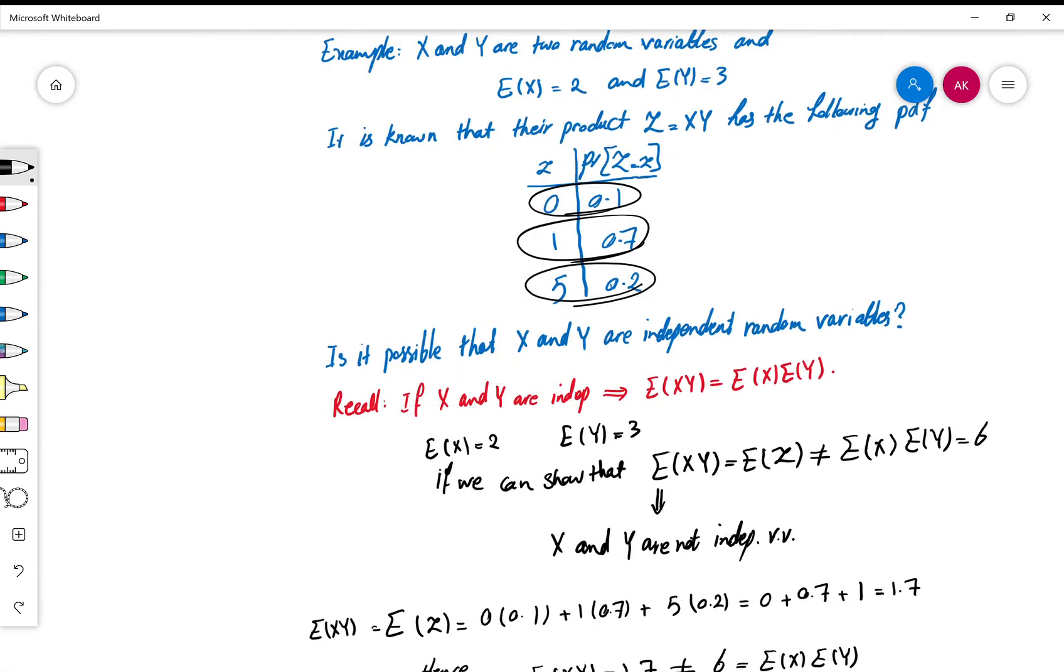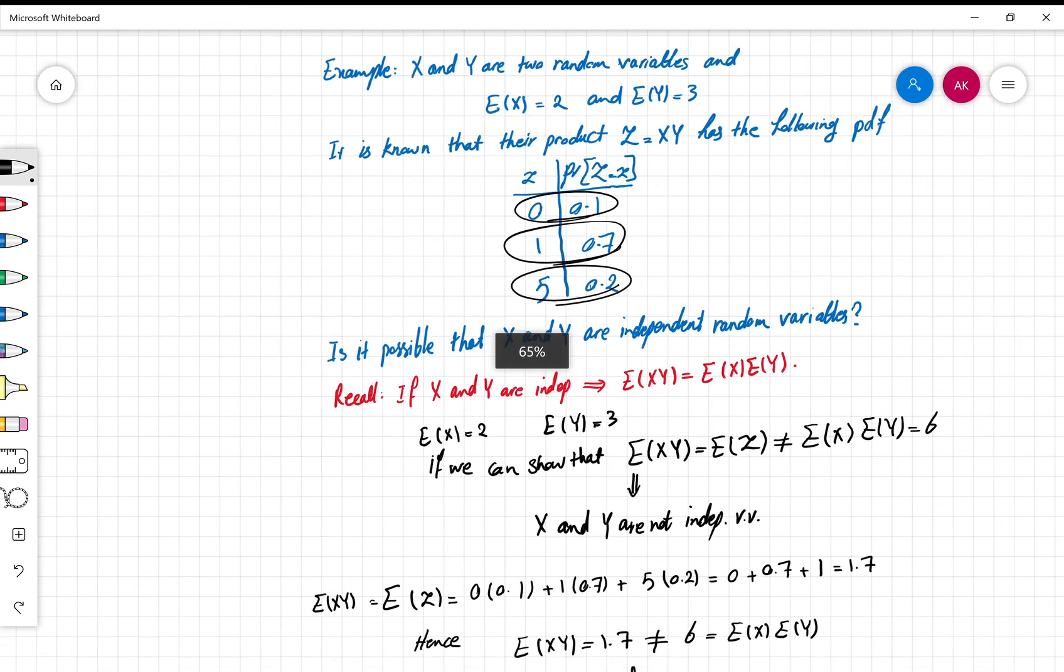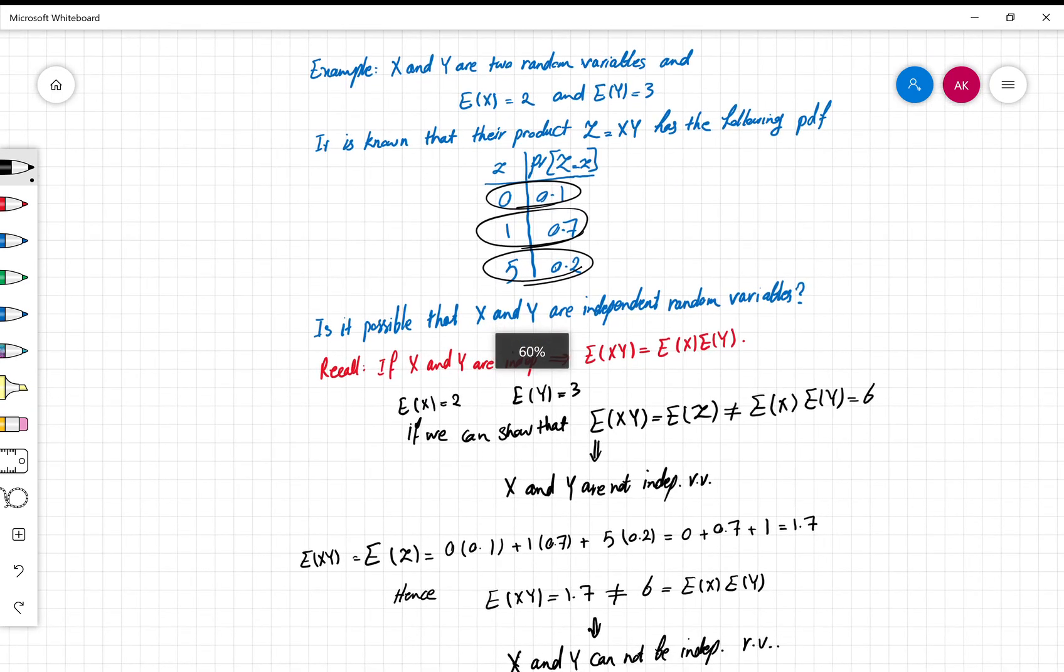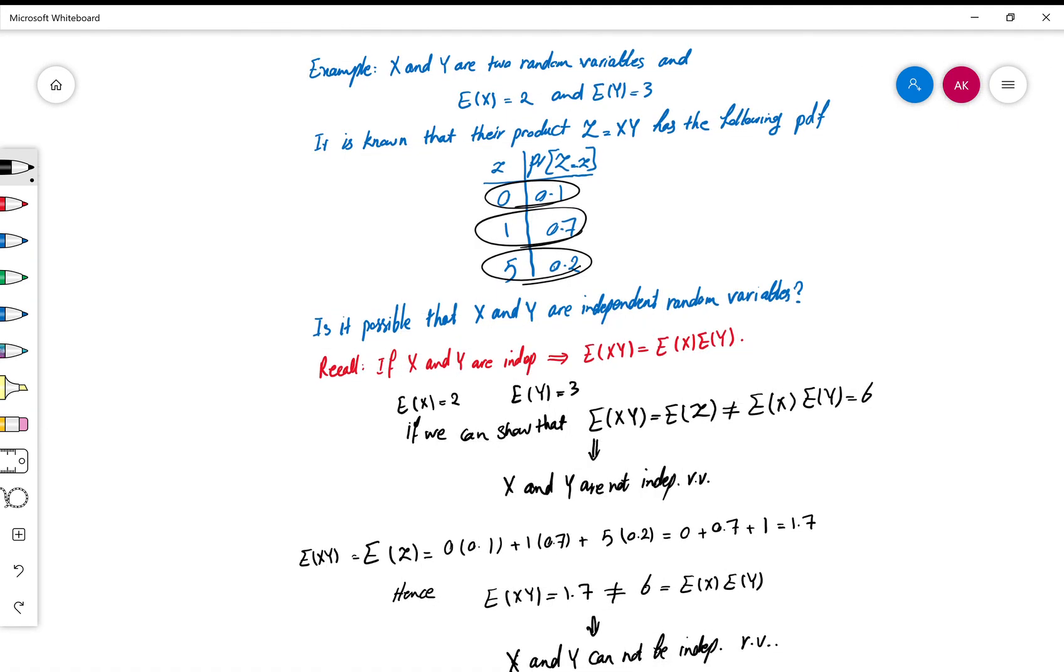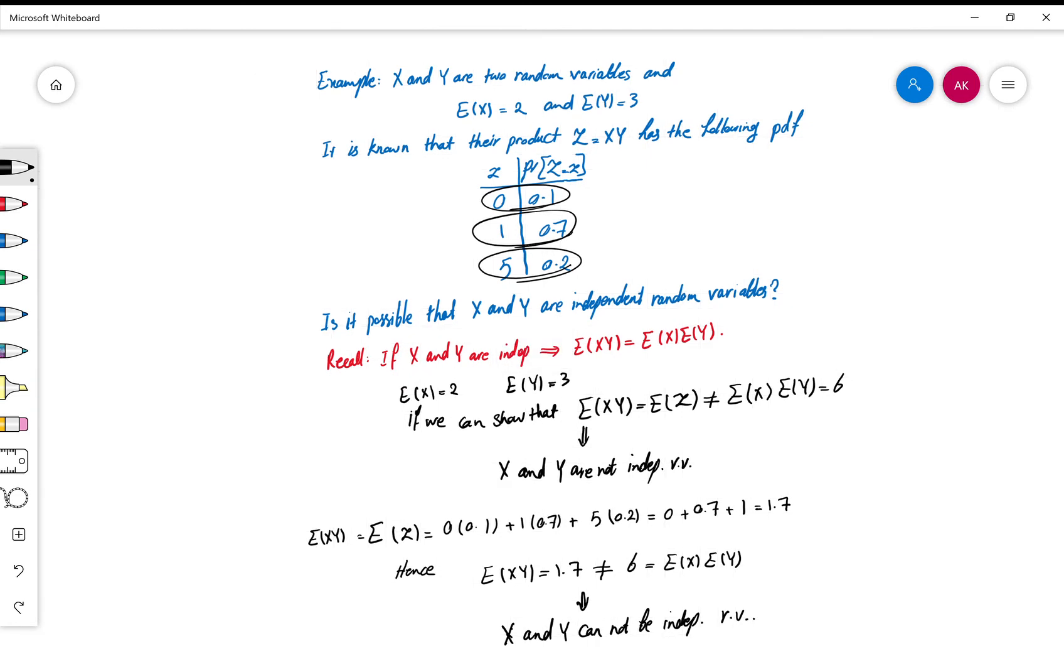So you see, checking independency requires lots of information, but this is a checkpoint: if E(XY) is not equal to E(X) times E(Y), you can definitely conclude right away that X and Y are not independent random variables.